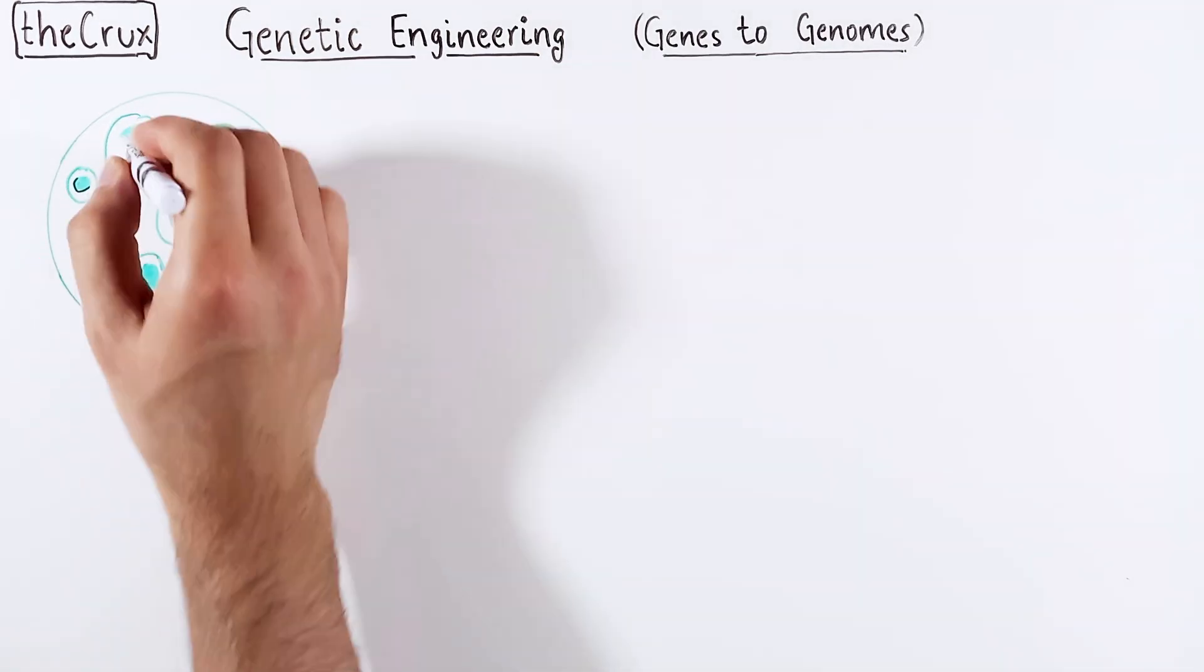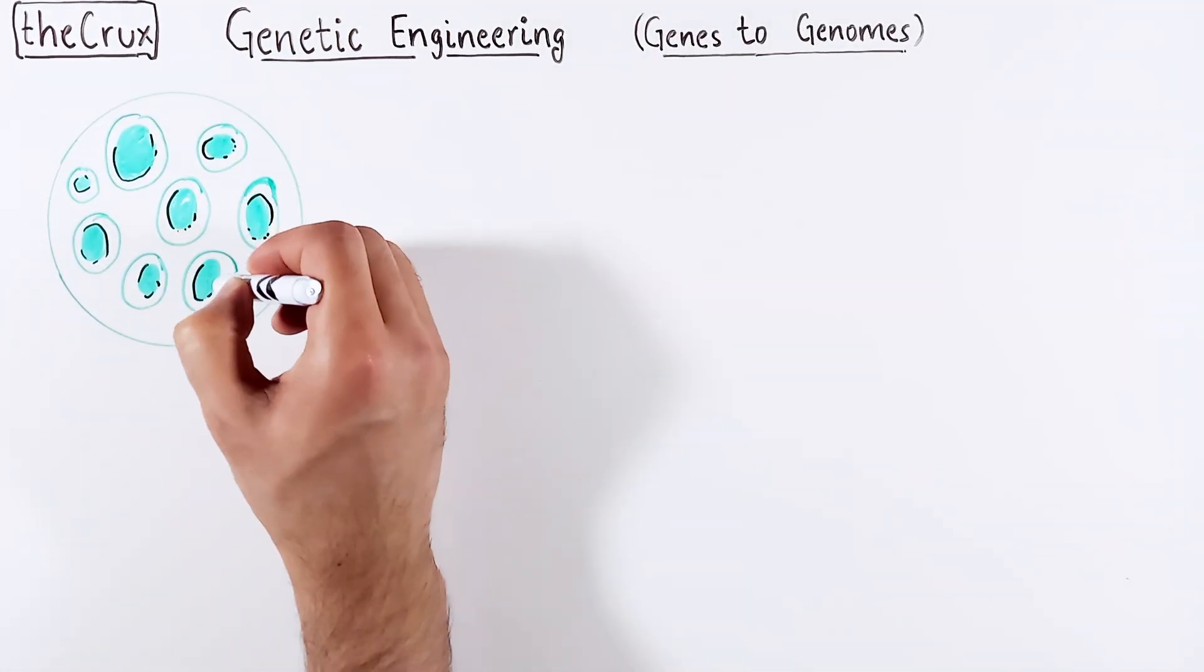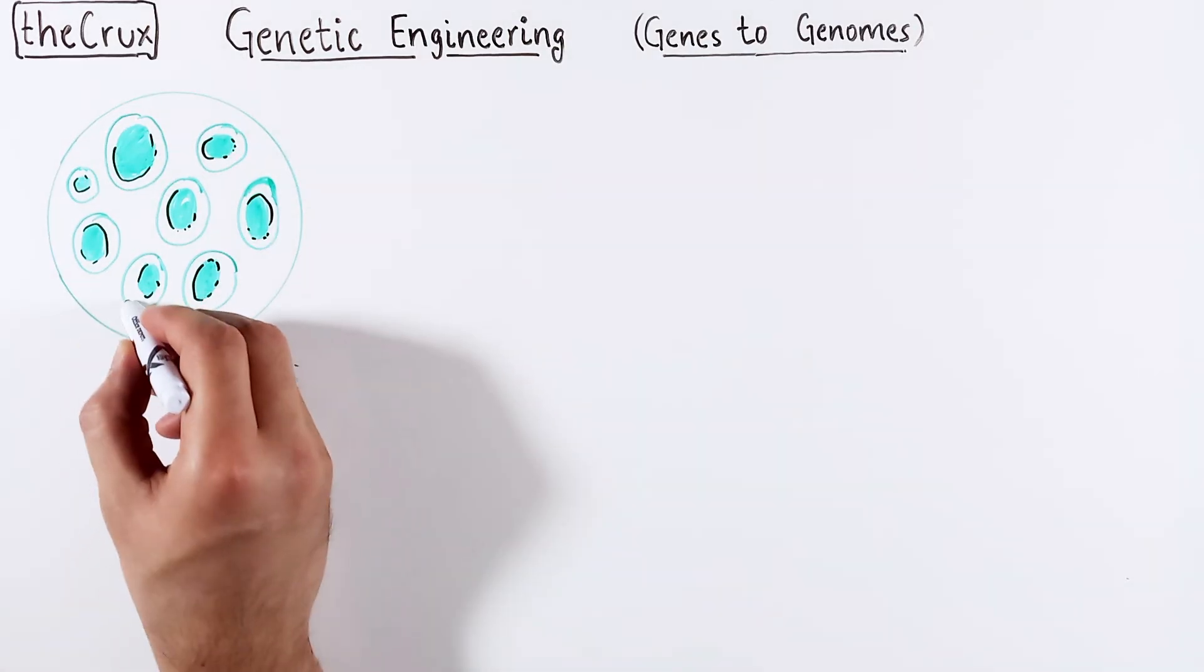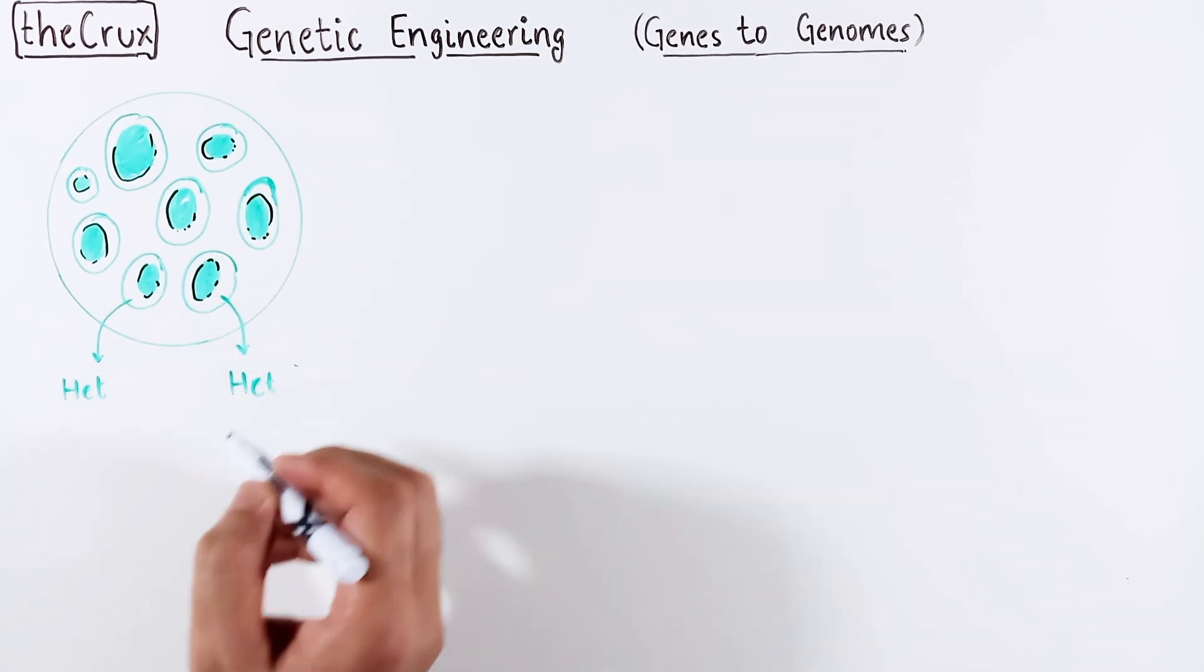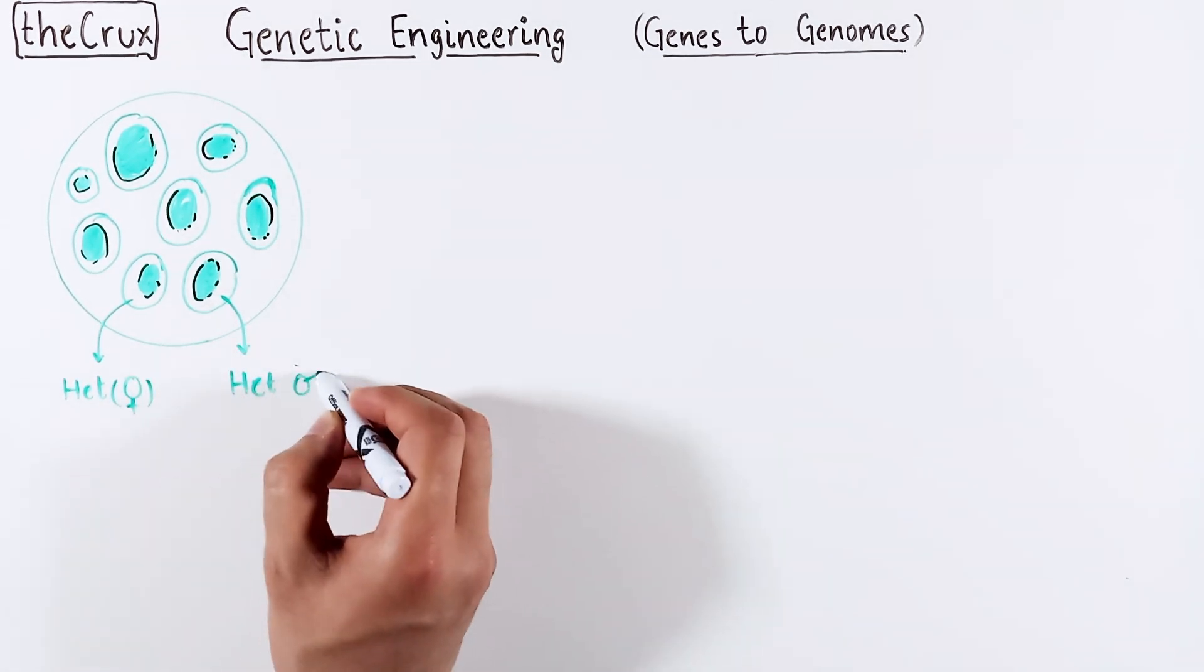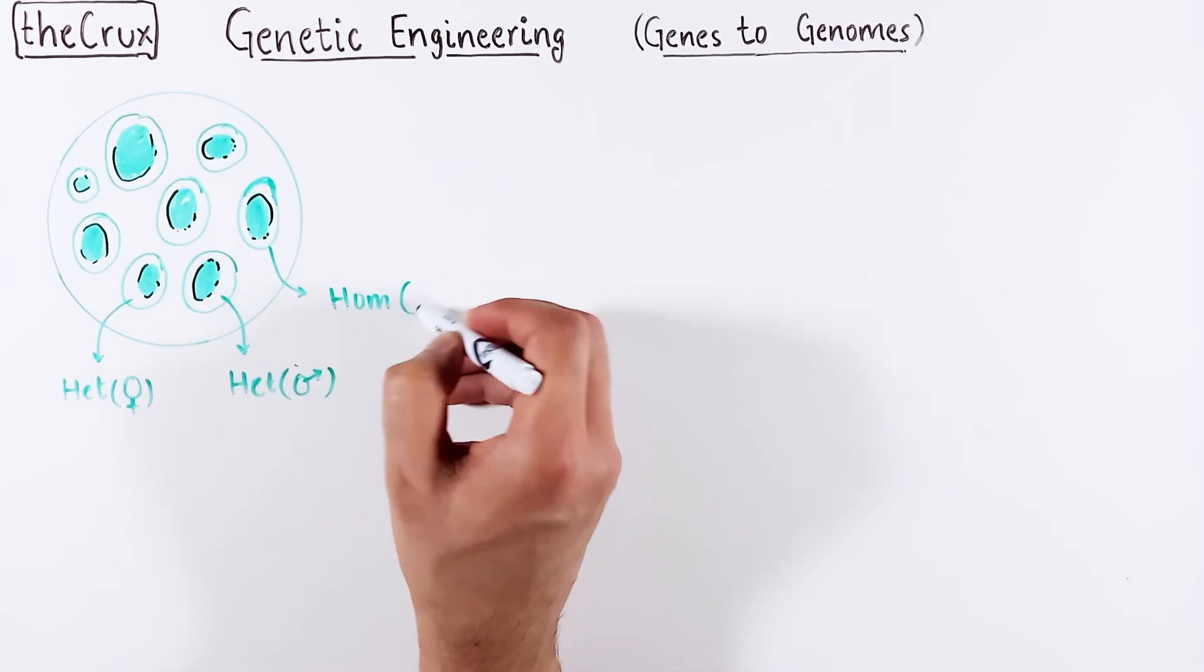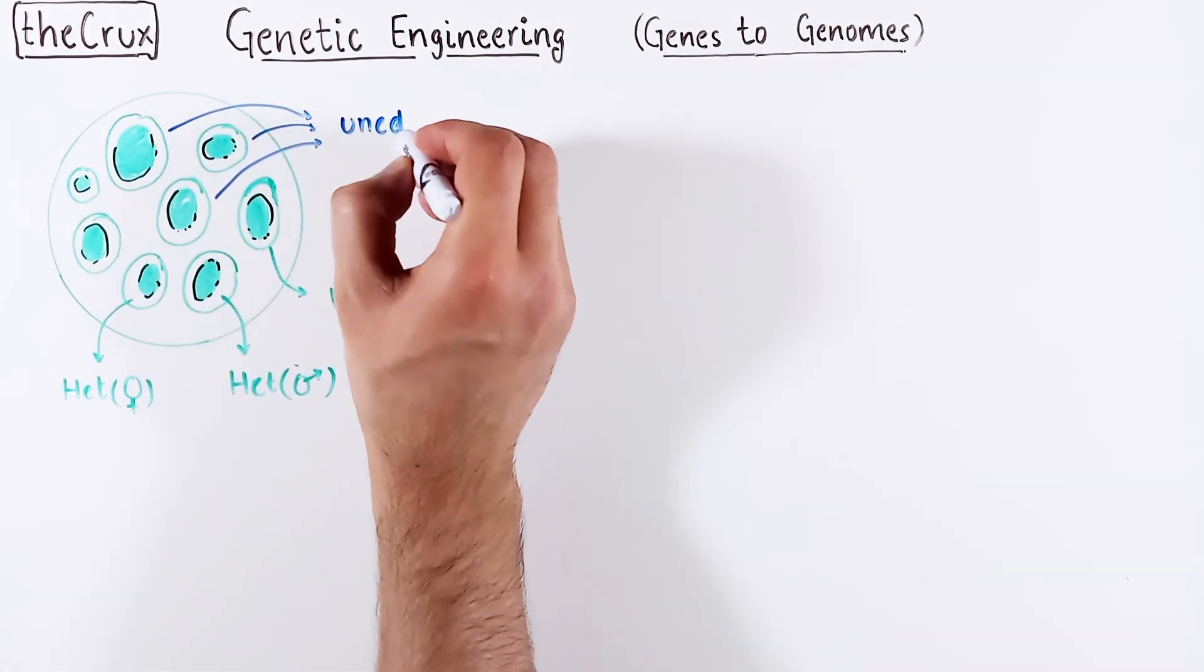Alright, so you've set up the experiment. Doesn't matter if it's knock-in or knock-out. But what is the expected outcome? Well, some cells will get edited as HETs. And diploid cells have two alleles, so you will get two types of HETs. And some cells might get edited on both chromosomes, meaning they're homozygous. But a fair majority of the cell population remains unedited.